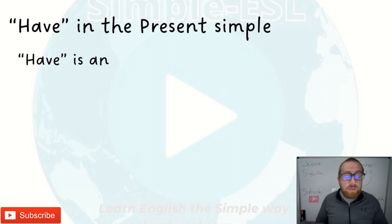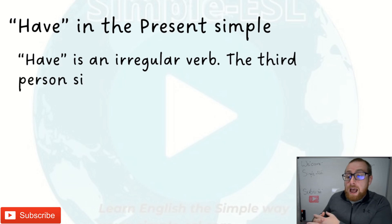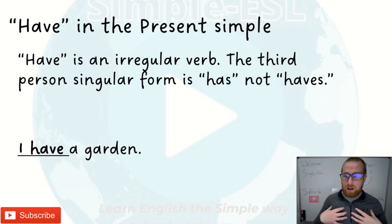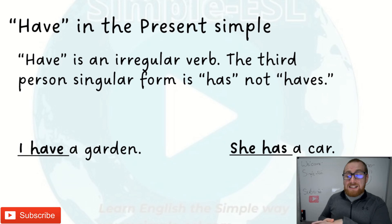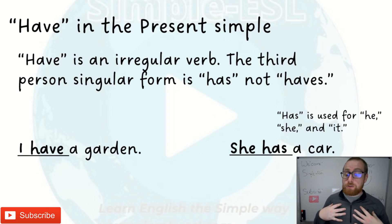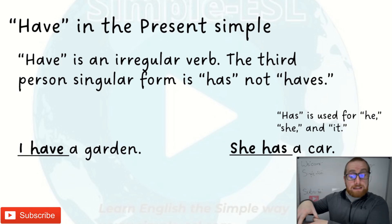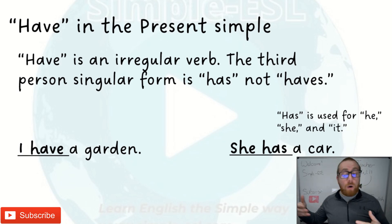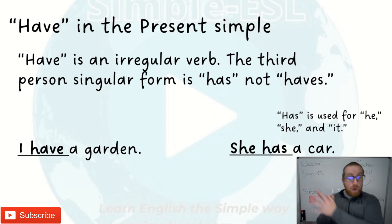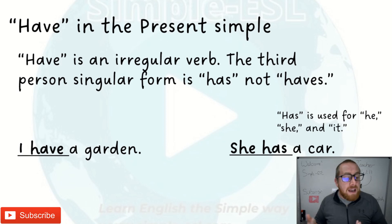It shows possession. 'Have' is an irregular verb — the third person singular form is 'has', not 'have'. For example: I have a garden, she has a car. 'Has' is used for he, she, and it. So: I have a book shows possession; she has breakfast at 7am shows routine; water boils at 100 degrees Celsius is a general truth — it is always the case. It's easy and important to learn, and we're going to practice and show the structure so you can use this in your day-to-day life.